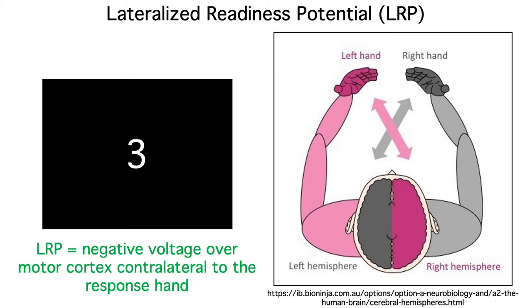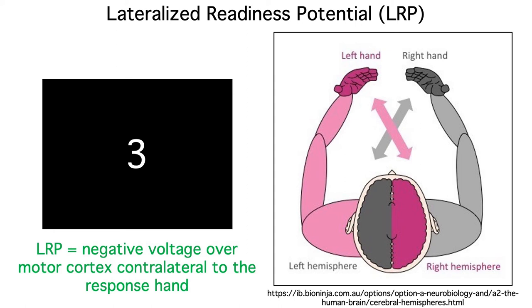And just like the N2PC, the lateralized readiness potential is a negativity over the contralateral hemisphere, except that it's contralateral to the hand that's about to respond rather than being contralateral to the location of the visual target. And it's biggest over motor cortex instead of visual cortex.